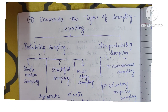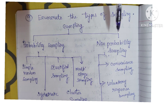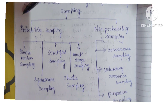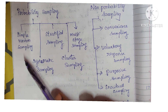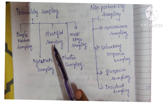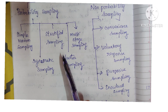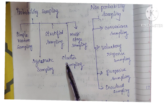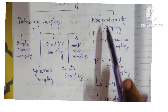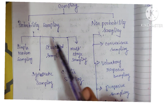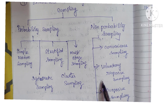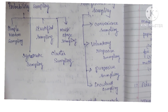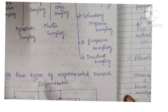Ninth question: enumerate the types of sampling. You have probability sampling and non-probability sampling. Under probability sampling, you have simple random sampling, systematic sampling, stratified sampling, multistage sampling, and cluster sampling. Under non-probability sampling, you have convenient sampling, voluntary response sampling, purposive sampling, and snowball sampling.